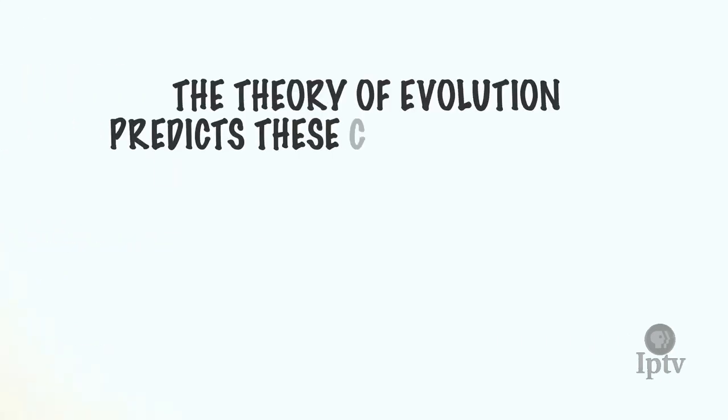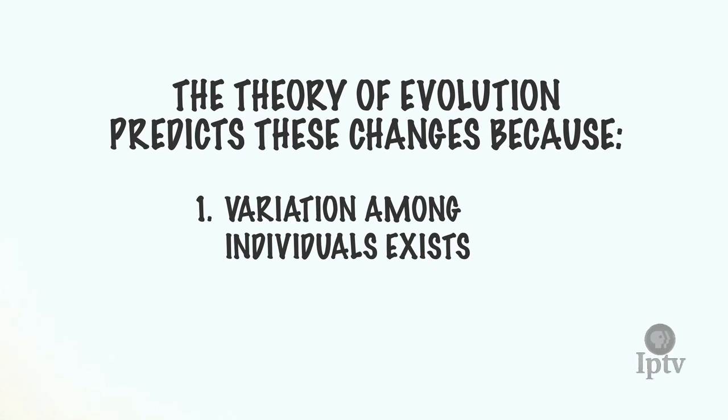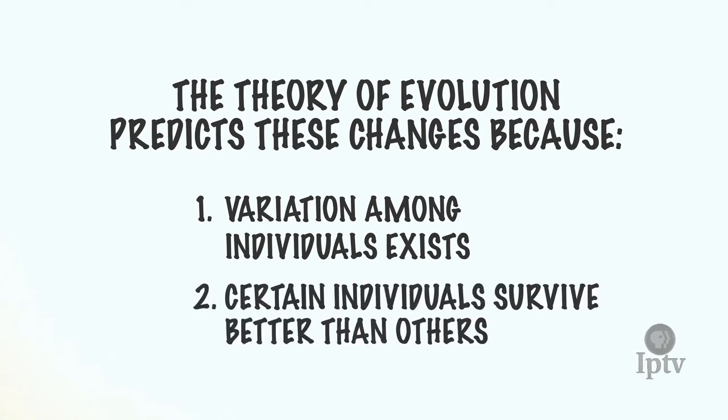The theory of evolution predicts these types of changes because one, variation among individuals exists, and two, certain individuals will survive better than others.